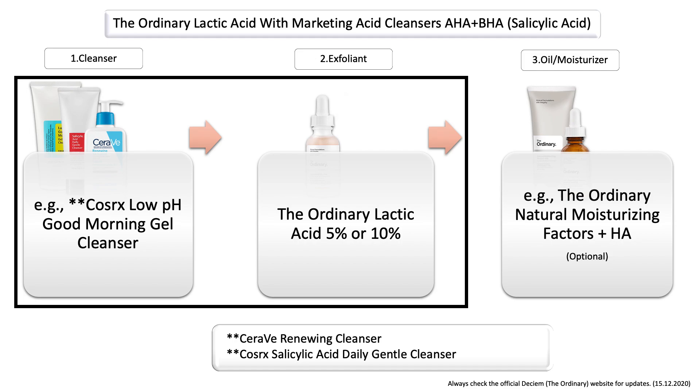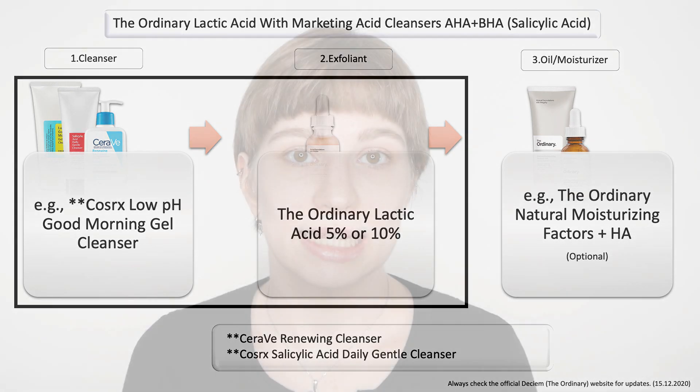For example, the CosRx salicylic acid daily gentle cleanser mentions on the bottle that it only includes 0.5% salicylic acid, which is pretty low. Salicylic acid at around 2% is usually effective as an exfoliating acid for acne, so 0.5% is low enough that you're fine to combine it with The Ordinary lactic acid 5% or 10%. However, to avoid confusion, I generally recommend that when using a leave-on exfoliant in your skincare routine, just use a gentle cleanser instead. Then you don't have to wonder whether you can use it or should avoid it. Some products don't have enough exfoliating acids to be effective, so marketing can sometimes be misleading.